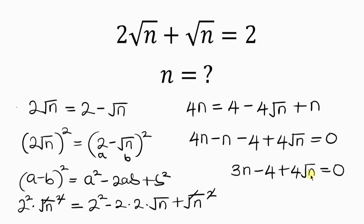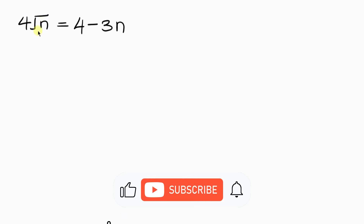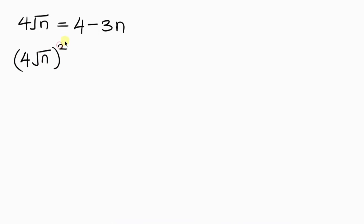Our next step is to get rid of this square root. I'm going to move 3n and minus 4 to the right hand side, leaving 4 root n on the left, equal to 4 minus 3n. To eliminate the square root, I'll take the square of both sides — the square of 4 root n, and the square of 4 minus 3n, all squared.